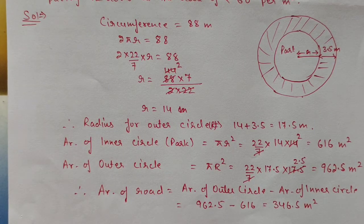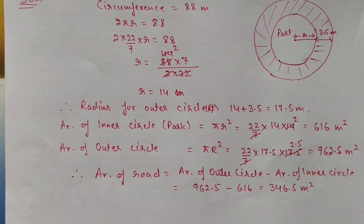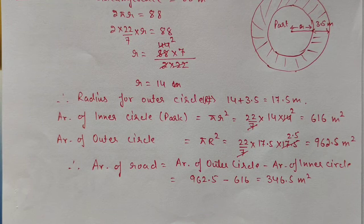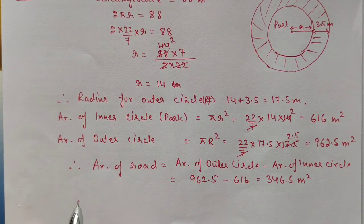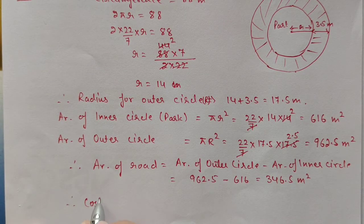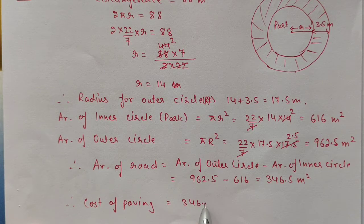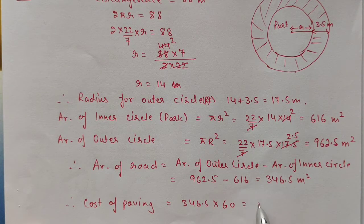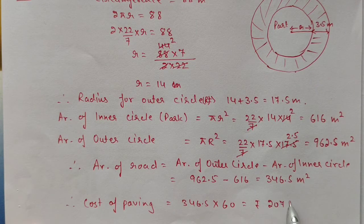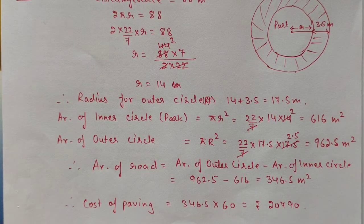Cost of paving equals area of path multiplied by rate equals 346.5 into 60 rupees equals 20,790 rupees.